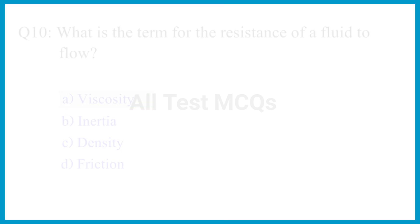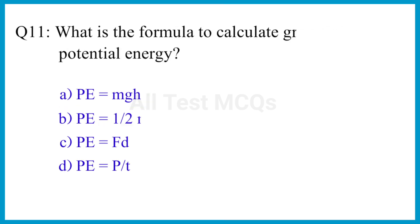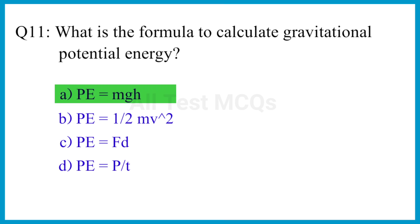Question number 11. What is the formula to calculate gravitational potential energy? The correct answer is option A. PE equals mgh.